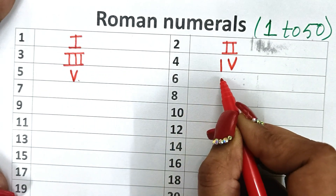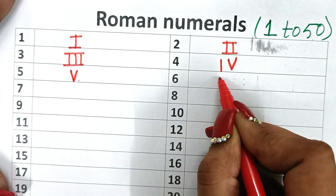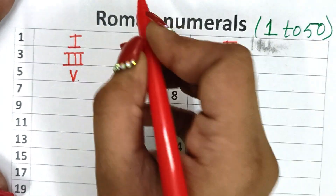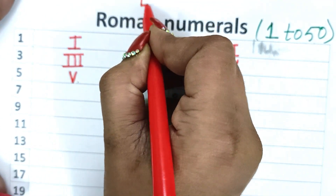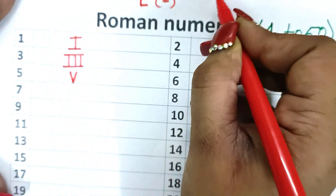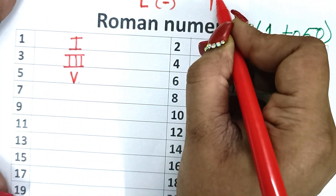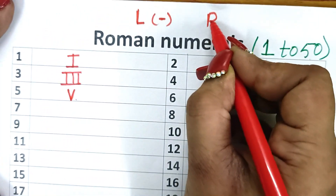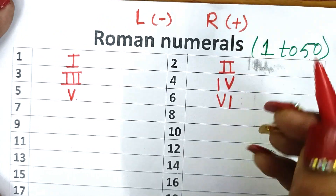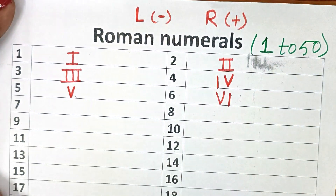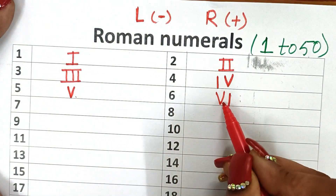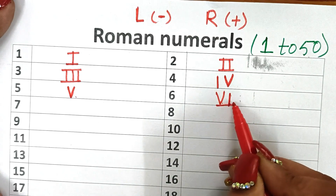Now 6. 6 is 5 plus 1, that is V and then I. Remember this: left side is minus and right side is plus. So 6 is 5 and 1 — V, I — that is 6.